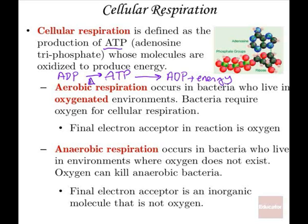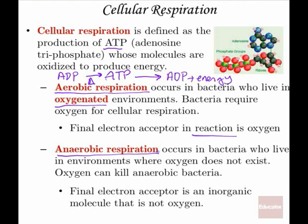Aerobic respiration occurs in bacteria that live in oxygenated environments, and in order for this energy production to occur, oxygen is required — at the end of the reaction, oxygen is the electron acceptor. Anaerobic respiration occurs in bacteria that live in environments without oxygen, and in fact oxygen will kill or eradicate these anaerobic bacteria. The final electron acceptor for those bacteria is an inorganic molecule that is not oxygen.